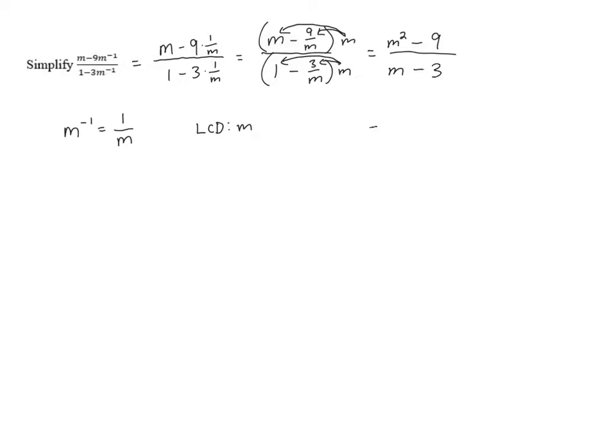To see if there's any reducing we can do, we need to factor the m squared minus 9. But it's just a difference of squares, so it factors pretty easily into m plus 3 times m minus 3 all over m minus 3. We can see that there's an m minus 3 in the top and bottom. So we can cancel those factors out. And we're left with an m plus 3 in the top.